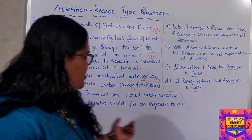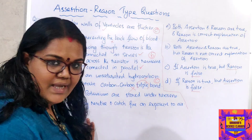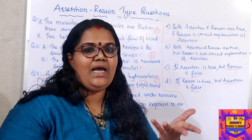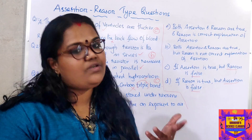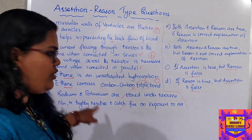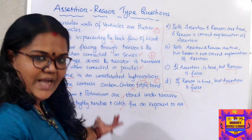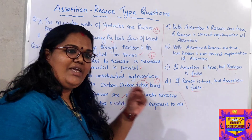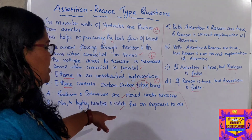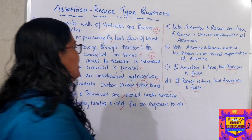So both statements are correct. Now I read them together. Why are sodium and potassium stored under kerosene? Because they are highly reactive and catch fire when exposed to air. The reason directly explains the assertion — it answers 'why.' In English we learned: 'why' question → answer with 'because.' The reason says: because they are highly reactive and catch fire on exposure to air — that is exactly the explanation for the assertion. So both are correct and reason is the correct explanation. Our answer is option A.